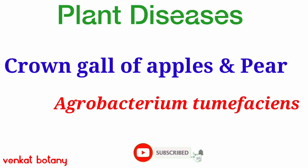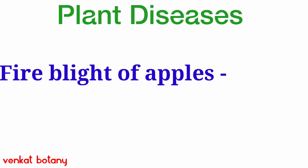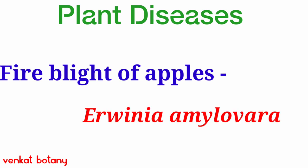Crown gall of apples and pear is caused by Agrobacterium tumefaciens. Fire blight of apples is caused by Erwinia amylovora.